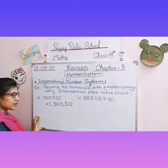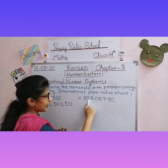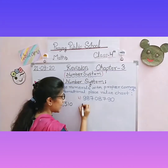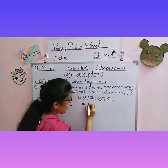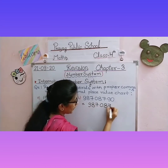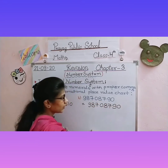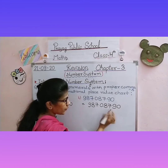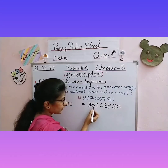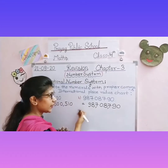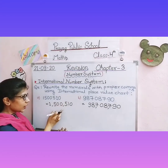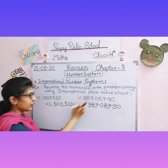Now next question, question number B: 98,708,790. We need to separate this with commas. First write the number, then carefully separate with commas: once, tens, hundred — comma — thousand, ten thousand, hundred thousand — comma — million, ten million. Hundred million has no digit here. So our question is done. In this way you will rewrite numerals with commas using the International Place Value Chart.